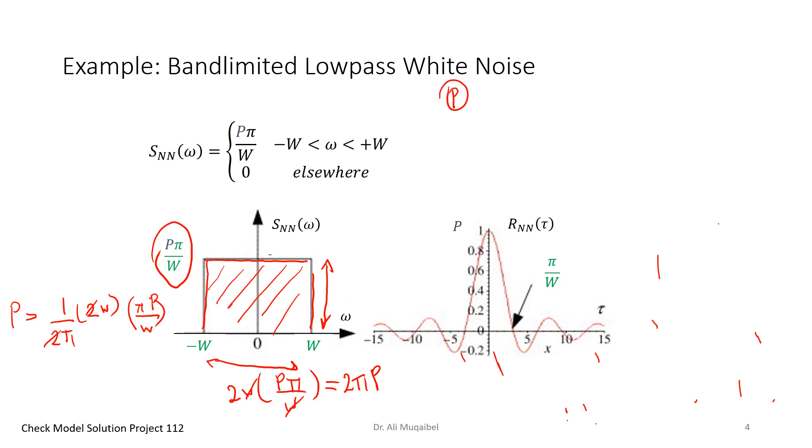So for a band-limited lowpass white noise, W is the limiting bandwidth or the cutoff frequency, and it's zero outside. If you do the inverse Fourier transform, you'll find that a rect in time gives you sinc. If you follow the tables or integral, you'll find that this is the autocorrelation, or how the samples are correlated if the noise is filtered using a lowpass filter.